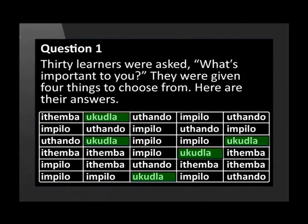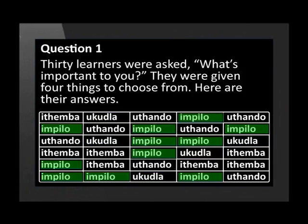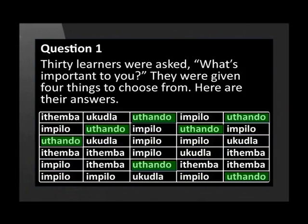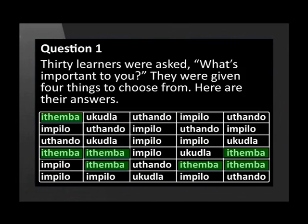Ukudla is food. Impilo is health. Utando is love. And Itemba is faith or hope.